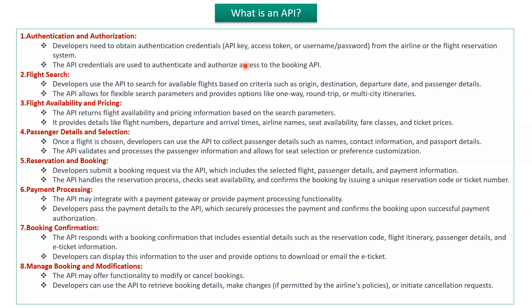The first one is the authentication and authorization related API. Developers need to obtain authentication credentials like an API key, access token, or username and password from the flight reservation system, so that developers can use these credentials to authenticate and authorize access to the booking API.